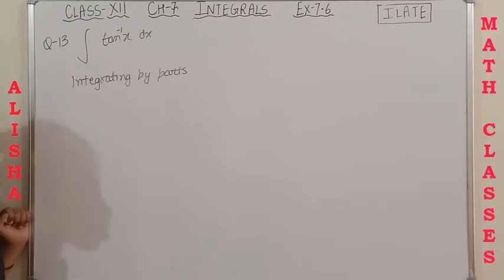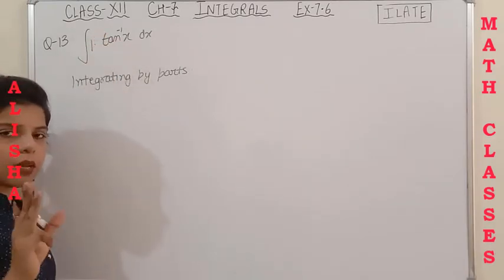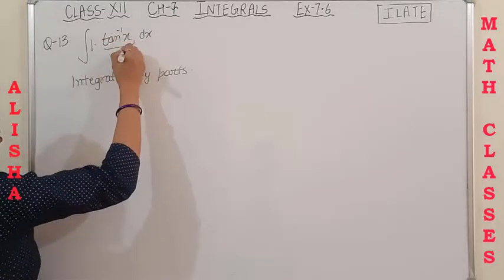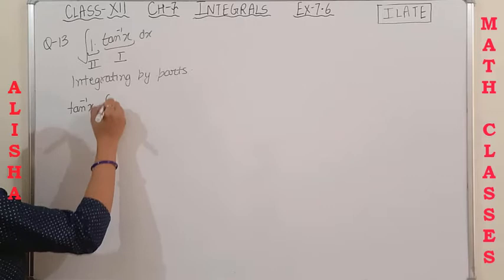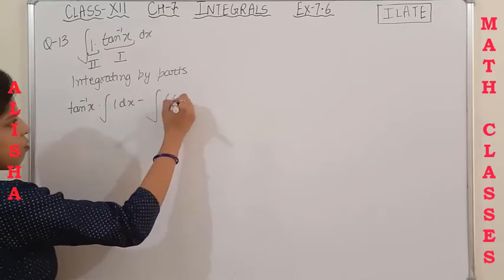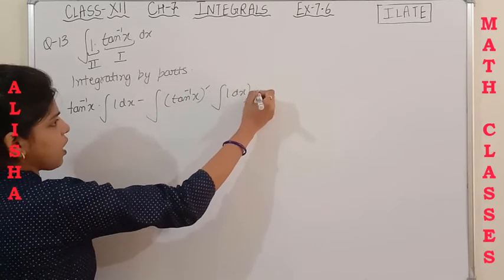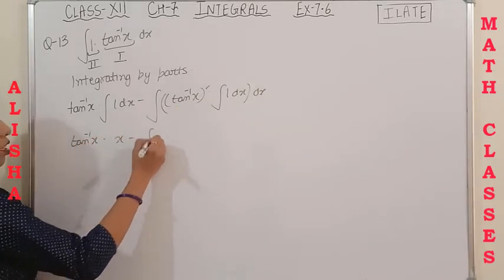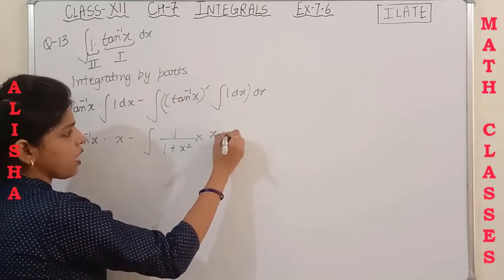Question 13 is the integration of tan⁻¹x dx. We have only one function, so for convenience we multiply by 1 to create a product of two functions, enabling integration by parts. The inverse function tan⁻¹x is the first function and 1 is the second function. Applying the formula: tan⁻¹x · x − ∫[1/(1+x²)] · x dx.